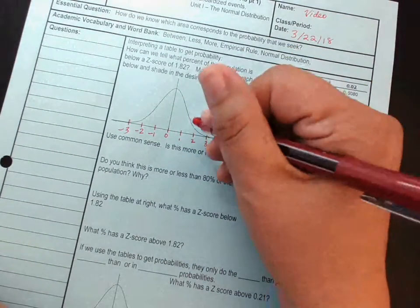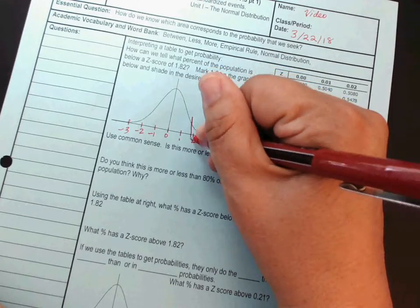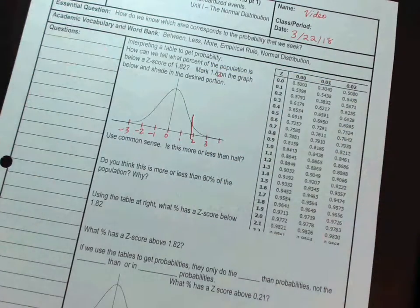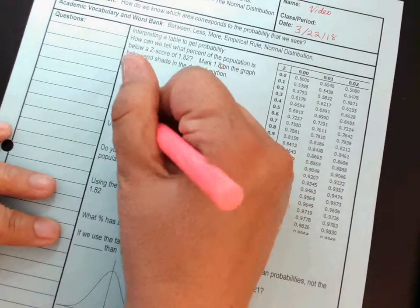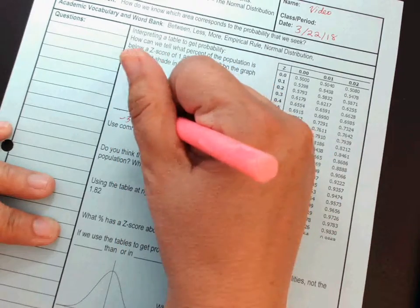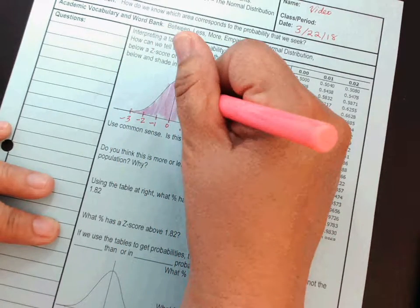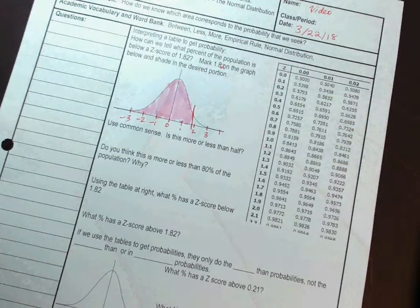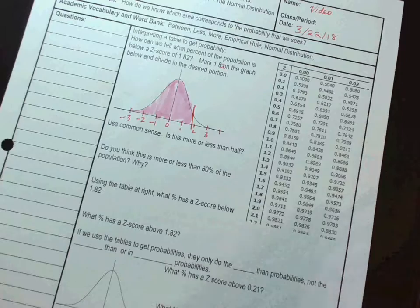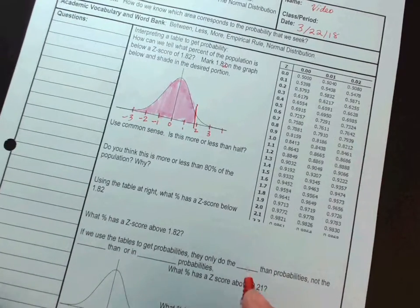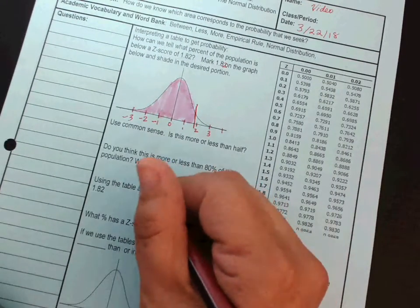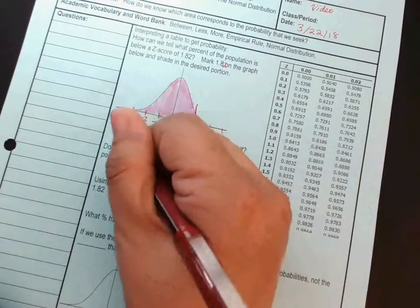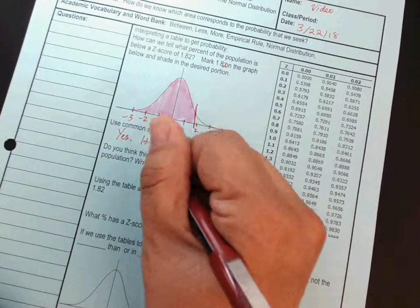And 1.82 would be about here. So the question is, what percent of the population is in this pink area? Well, first, let's use some common sense. Do you think it's more than half? Sure. Yes. It's more than half.